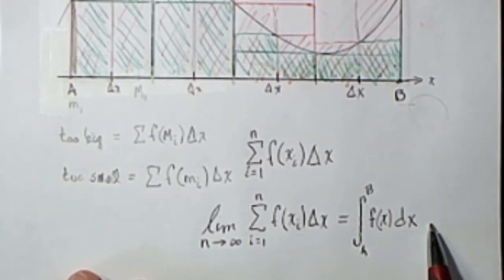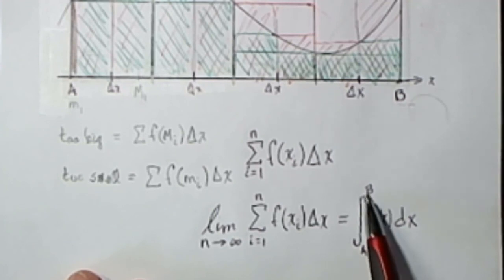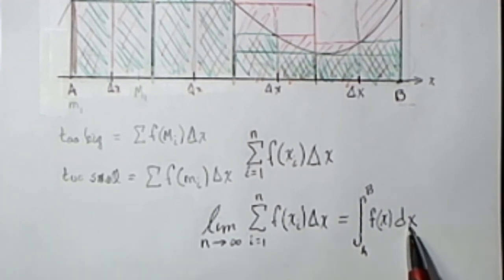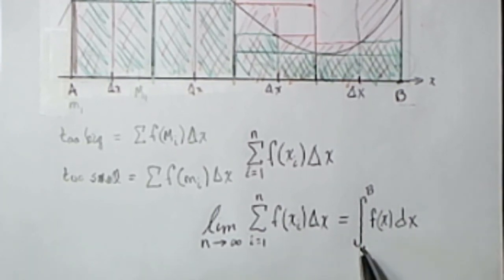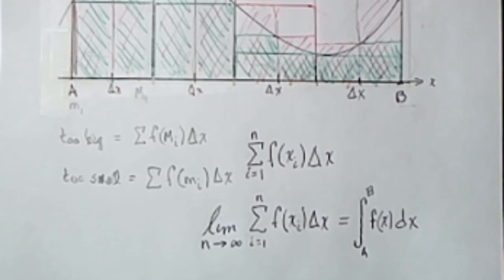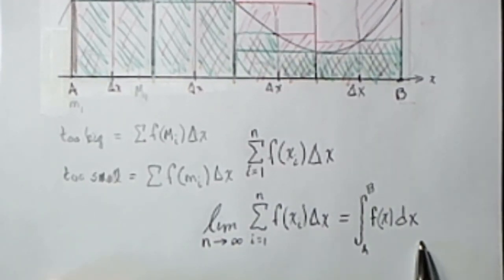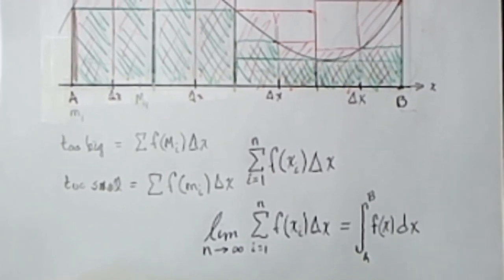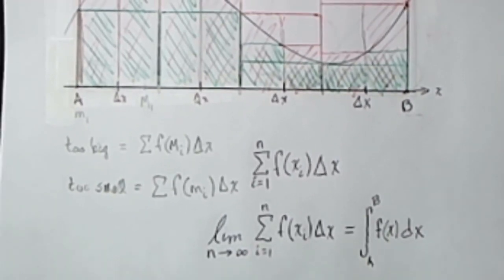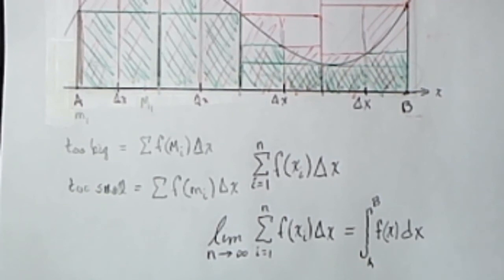So this is a rectangle, and we're going to add up all of those infinitesimally width rectangles from a to b, and that's going to be exactly the area in the limiting process. This kind of thing is called a definite integral, and we're going to look at how to calculate definite integrals. But we'll do that in another video.